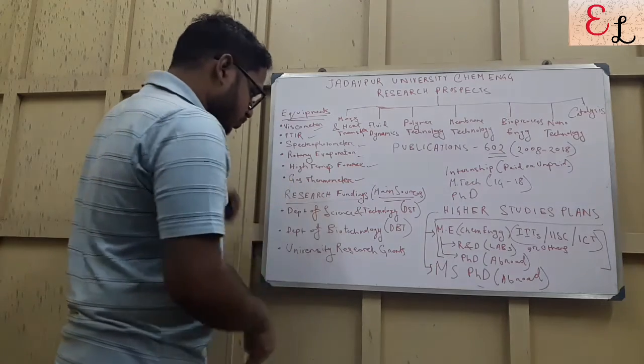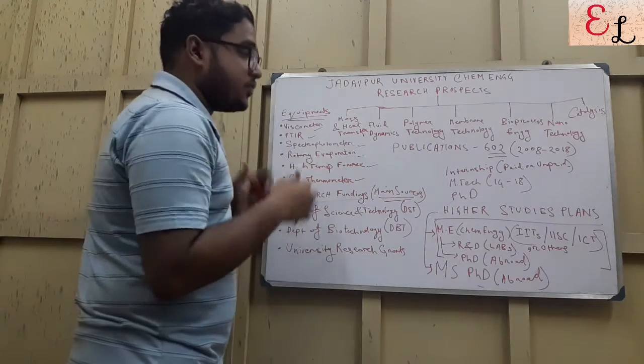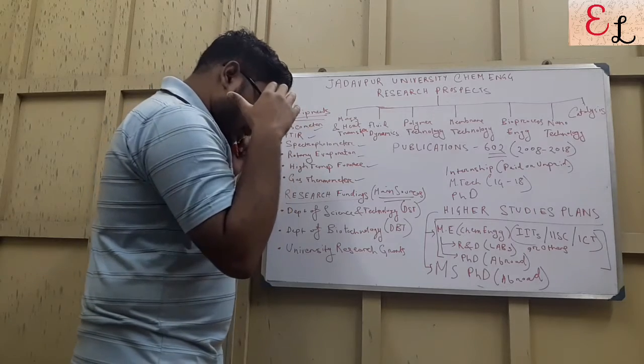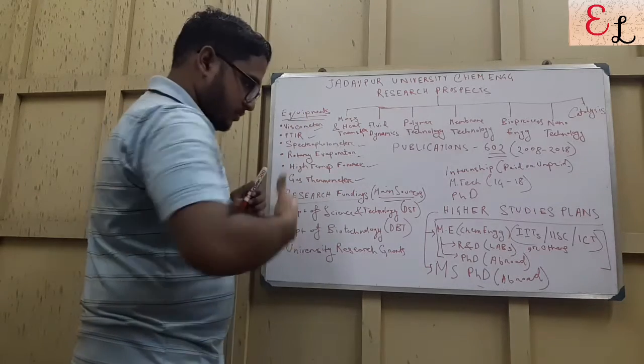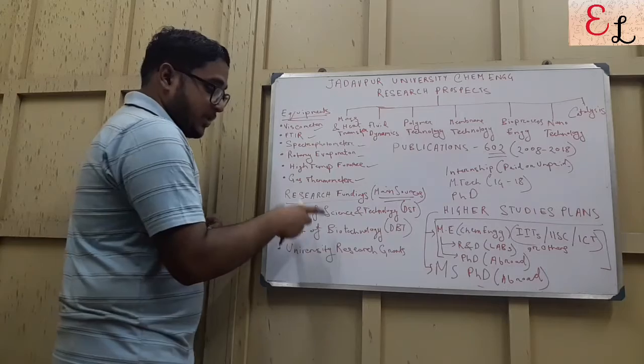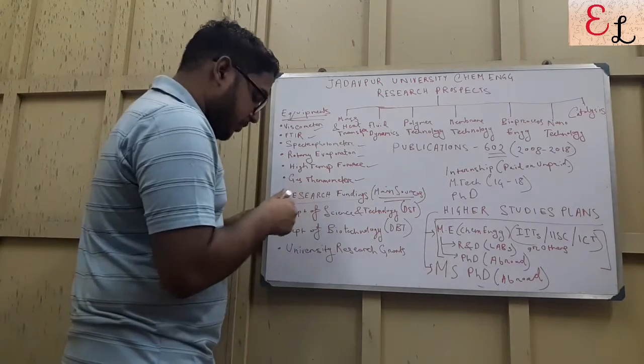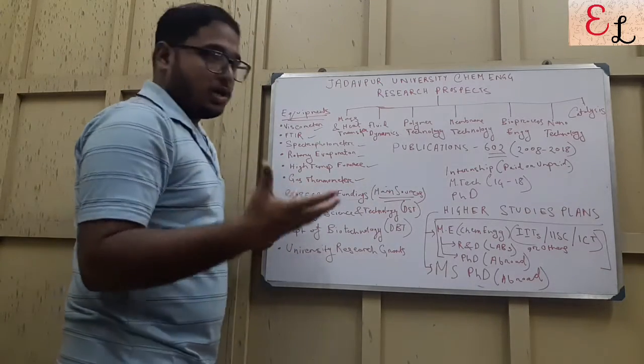Now let's come to research fundings. Where does the research funding come from? There are three major sources: the Department of Science and Technology (DST), the Department of Biotechnology (DBT), and the University Research Grants.